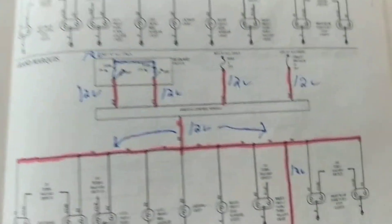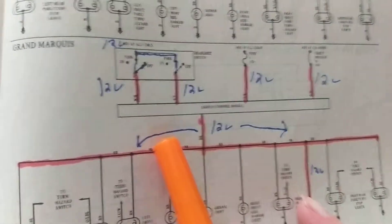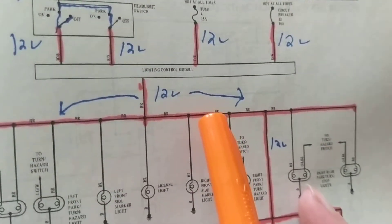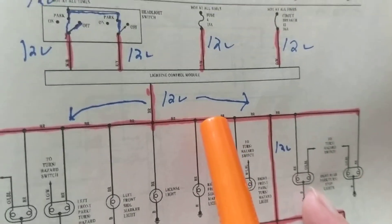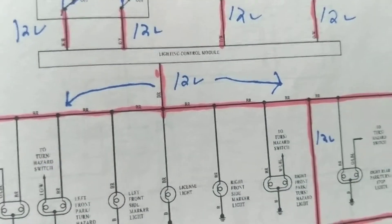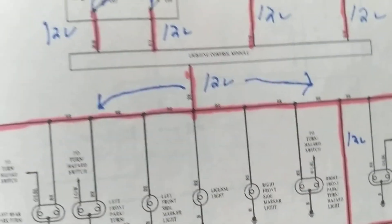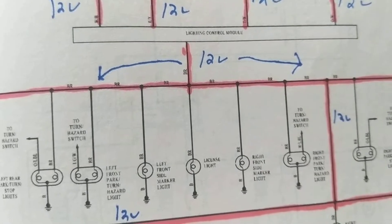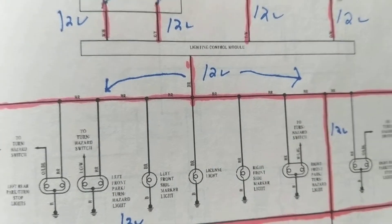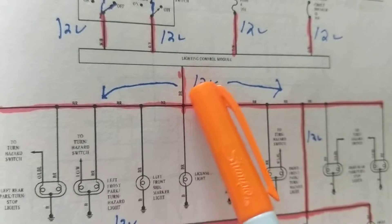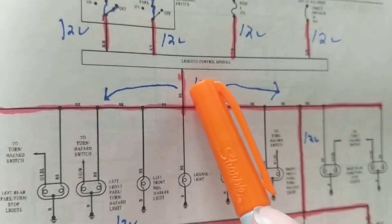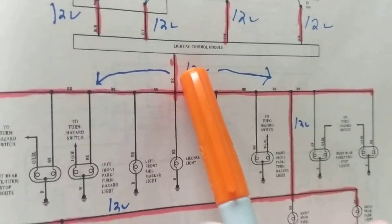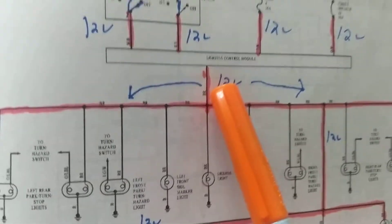Let's understand the circuit first. The parking lamps are on — you want the parking lamps to be on. As I specified, lighting control modules — many, many modules. You have PCM modules, TCM modules for transmission, ECMs — engine control modules — and the body control module for the accessories.